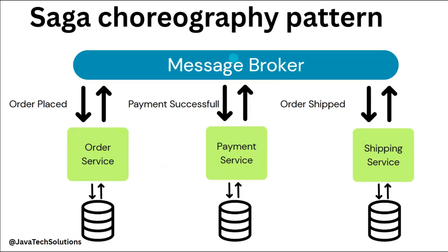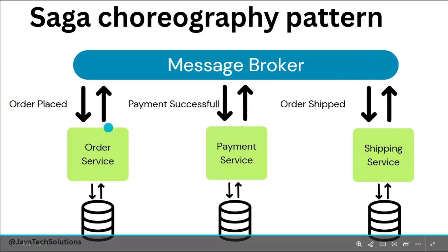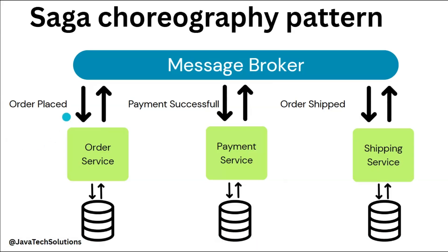Order details will push the data here, and payment service will pull the data. Once the payment service succeeds, it will push data again to the message broker, and accordingly the shipping service will pull data from the message broker. Once it succeeds, it can push data or update the order status. In case of failure — say payment fails — we can do a rollback of the order service to maintain consistency, update the status, and show the user that the order was not placed successfully. This is the activity around the choreography pattern.